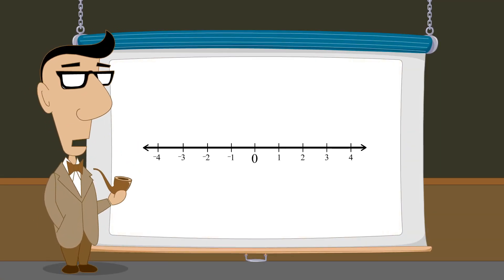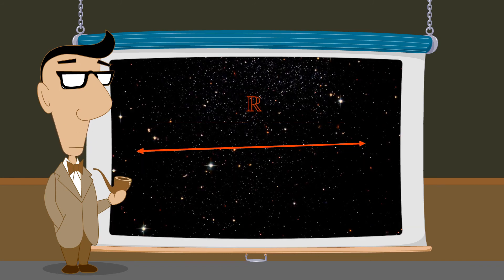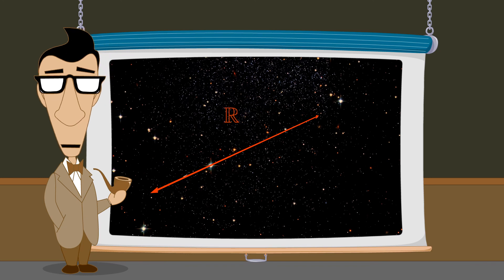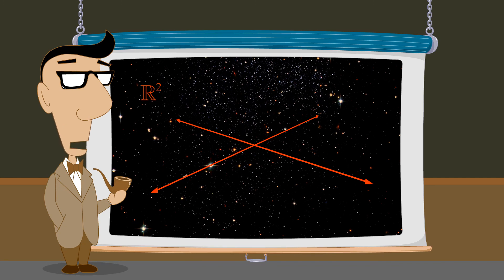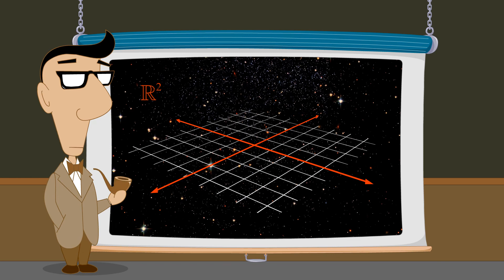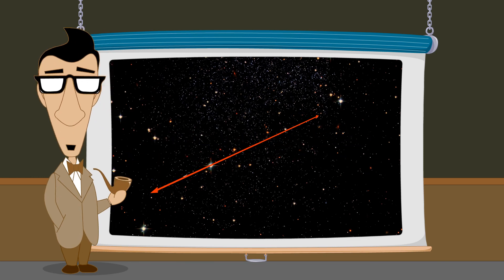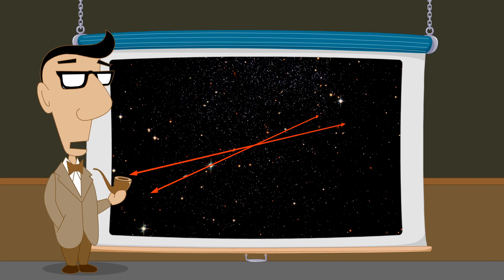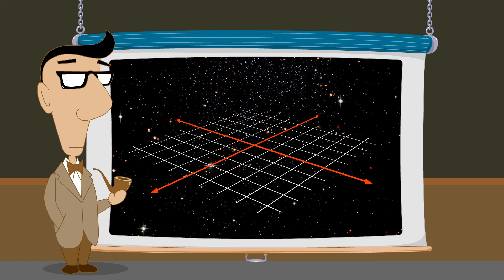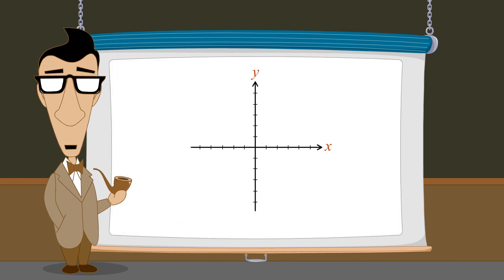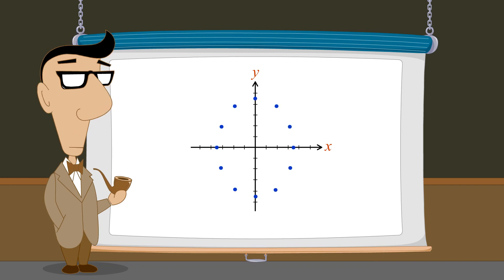We have seen that the number line corresponds to the set of real numbers R. Forming the Cartesian product of the set of real numbers with itself is equivalent to forming the Cartesian product of the number line with itself to form the Cartesian plane. Just as the number line consists of a continuum of points in one-dimensional space where each point corresponds to a unique real number, the Cartesian plane consists of a continuum of points in two-dimensional space where each point corresponds to a unique ordered pair of real numbers. Using a two-dimensional Cartesian coordinate system, we can graphically display sets of ordered pairs as groups of points. Later, we will see how algebraic equations can describe infinite sets of points which, when viewed in this system, appear as shapes in two dimensions.